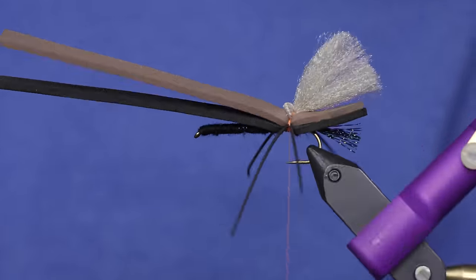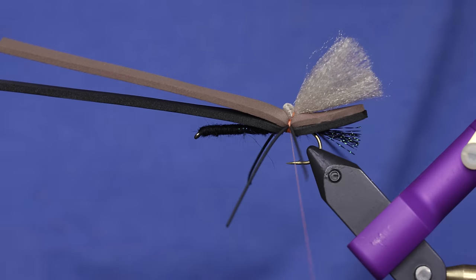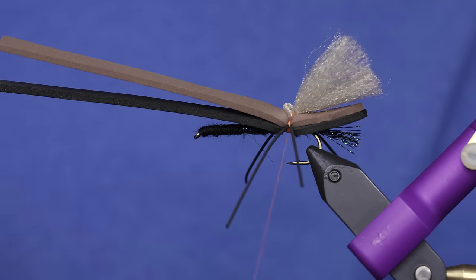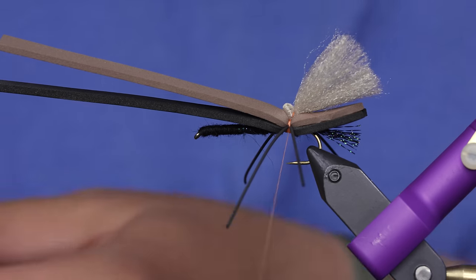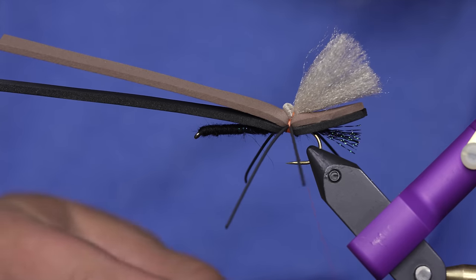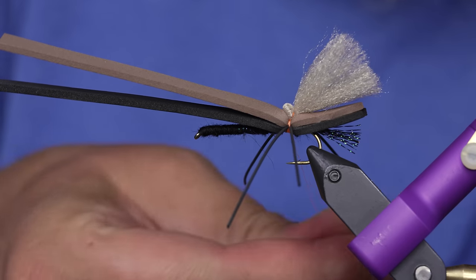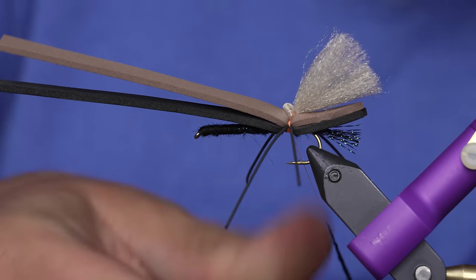So I'll trim that off. That's about the length of the back wing that I want. And then to ensure that those legs stay at the angle that we want, I'm going to take a little bit more of the dubbing and just put that through those thread wraps.